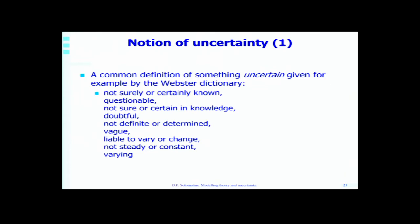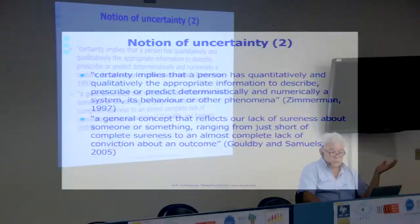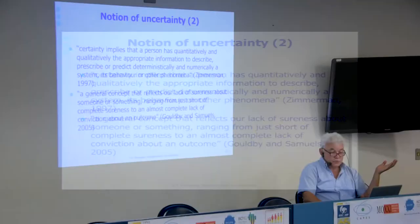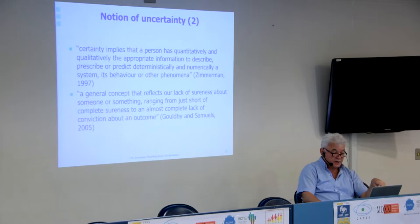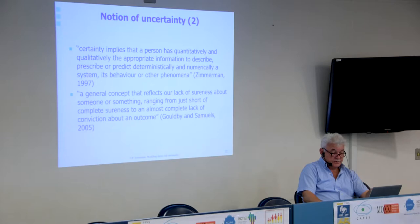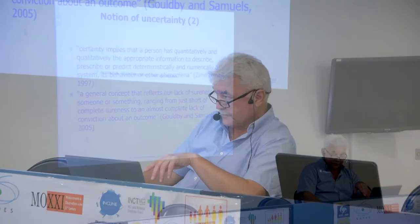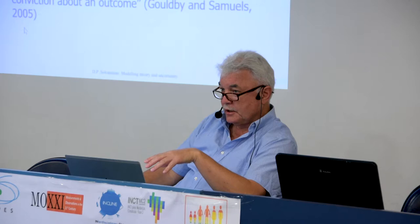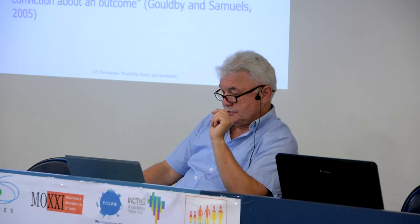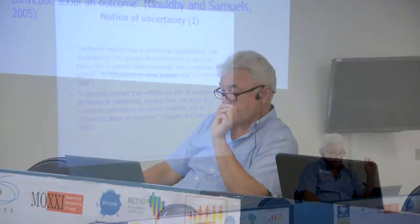Some people say uncertain means not certain, and certain means not uncertain — a vicious circle. But you understand more or less what uncertainty is. There are different authors who introduce different notions of uncertainty. Zimmerman said certainty implies that the person has quantitatively or qualitatively the appropriate information to describe, prescribe, or predict deterministically and numerically the behavior of phenomena. Goldbin Samuels from HR Wallingford, in a Flood Site project document — a highly recommended website — defines uncertainty as a general concept that reflects our lack of sureness about someone or something, ranging from just short of complete sureness to an almost complete lack of conviction about an outcome.